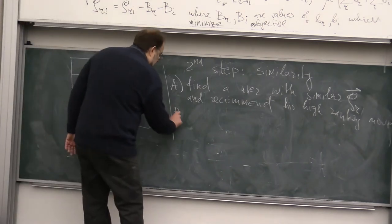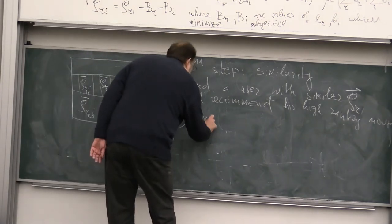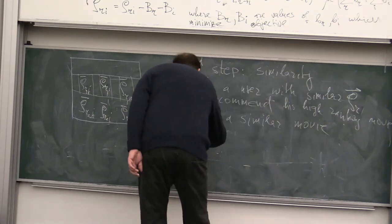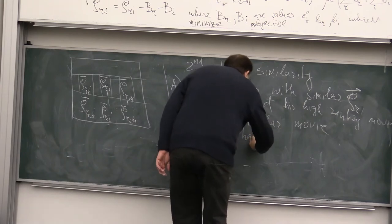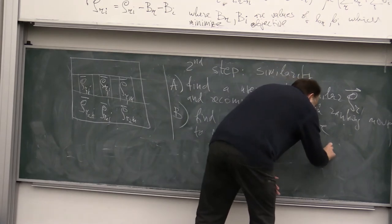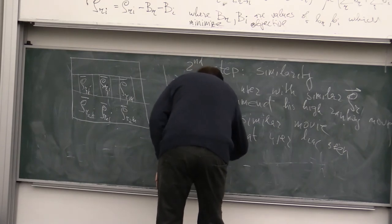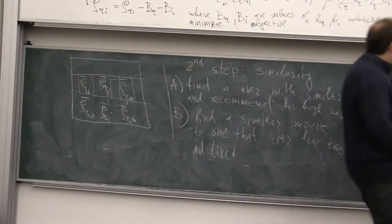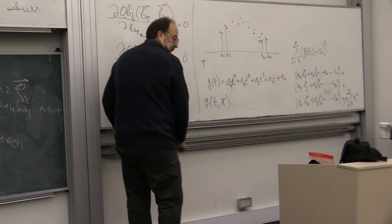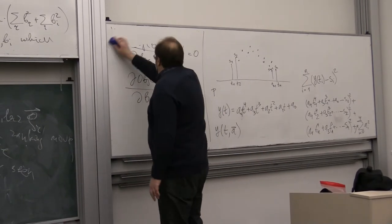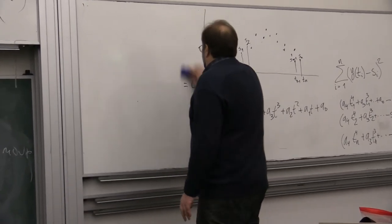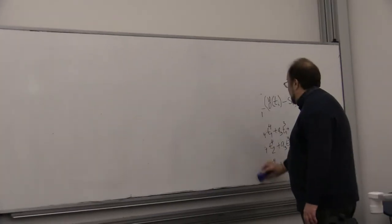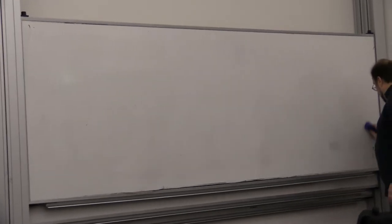Option B is to go the other way around: find a similar movie to one that the user has already seen and liked. These very basic methods — least squares and various types of correlations — are essential to learn. They are not rocket science, essentially just very basic calculus, but they make a huge amount of money for e-commerce.